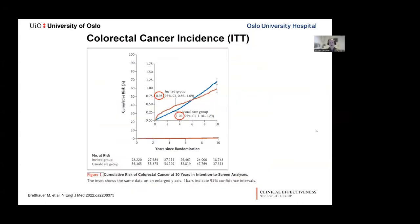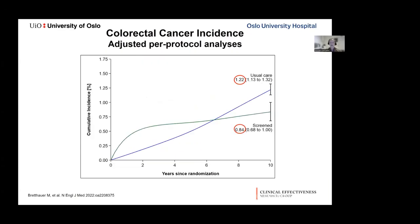The primary endpoint was colorectal cancer incidence after 10 years. In the intention-to-treat analysis, the risk of colorectal cancer in the usual care group was 1.2% versus 0.98% in the group offered screening — a relative risk reduction of 18%, with a relative risk of 0.82. In the per-protocol analysis, comparing only patients who actually received a colonoscopy with the control group, the risk dropped from 1.2% to 0.84%, giving a relative risk reduction of 31%.